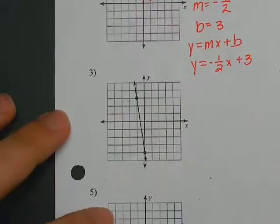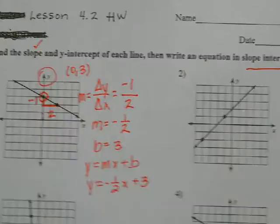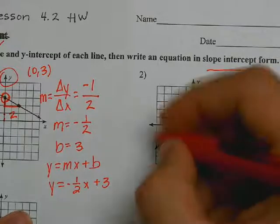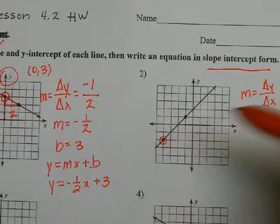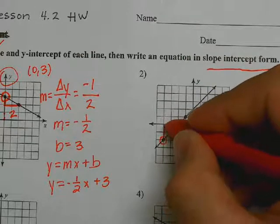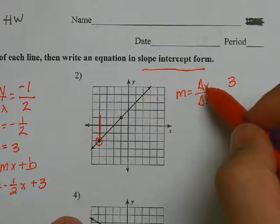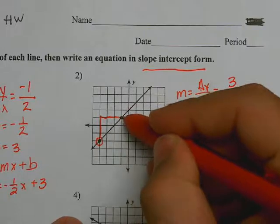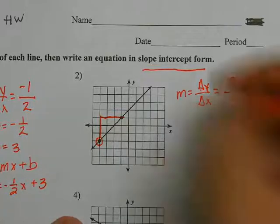Let's do number two to show you a positive slope. First step, we're going to find slope by doing the change in y over the change in x. Find the leftmost point. Once we find that point, we're going to change vertically — change in y. We would go up three. So I change vertically by three. Then how do I change horizontally? Three times. So three over three equals one. My m is one.